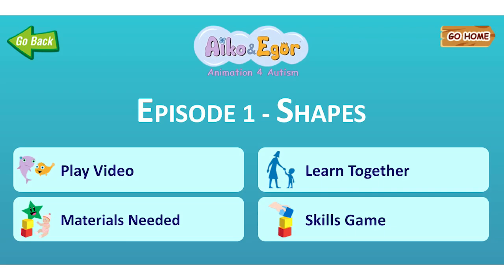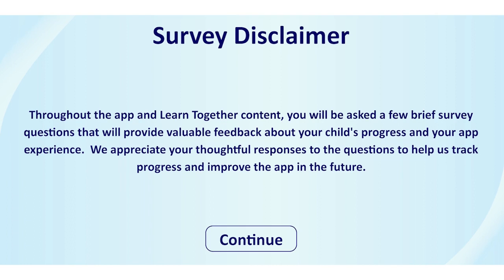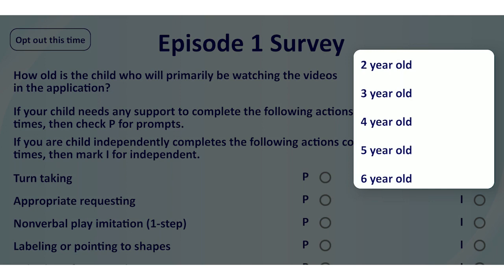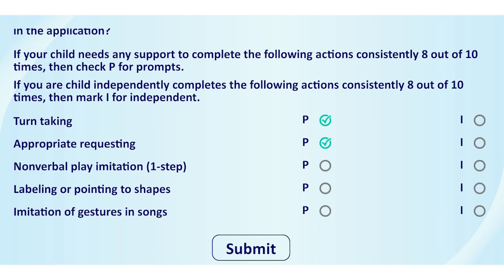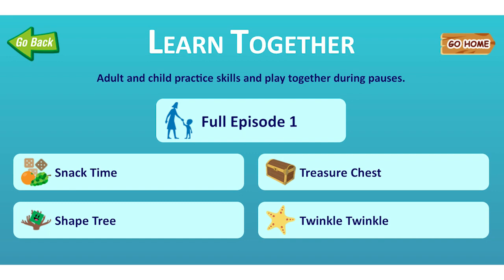Let's Learn Together. Learn Together uses the same content from Play Video and provides video models of skills, embedded pauses, instructions, and data collection to support you and a child with ASD in practicing skills together. Number 1: A valuable aspect of the app is the data collection component to track your child's, client's, or student's data. Number 2: Take each pre-survey at the beginning of each episode. If you are unsure whether your child can complete a skill independently over time, we recommend that you select P for prompt.